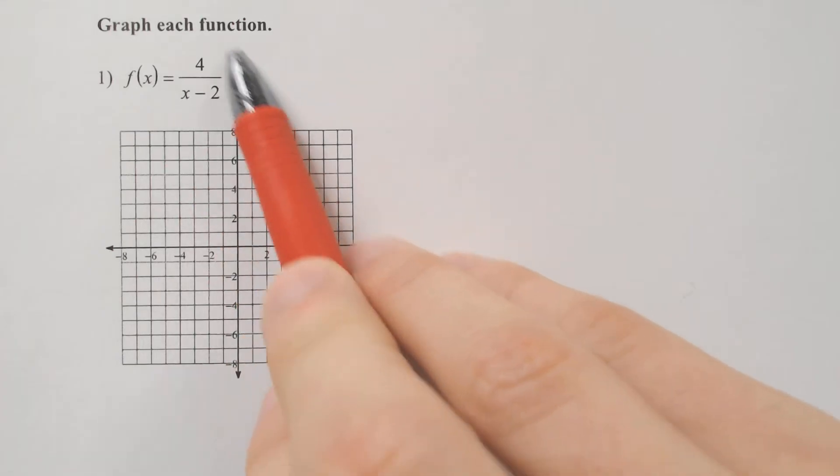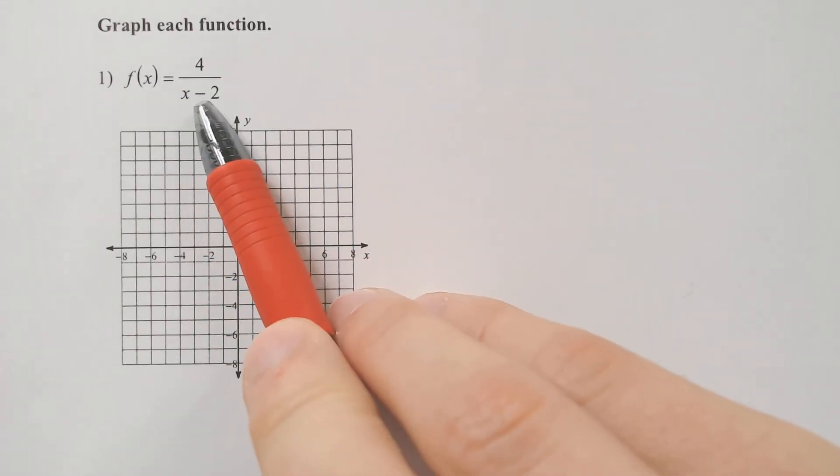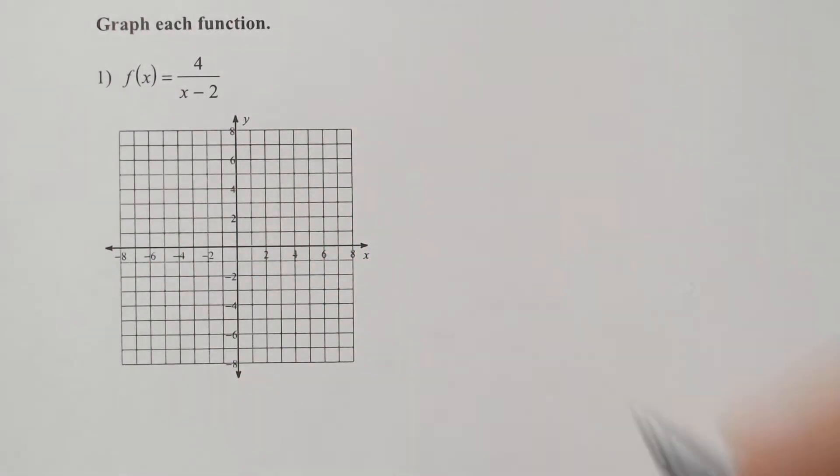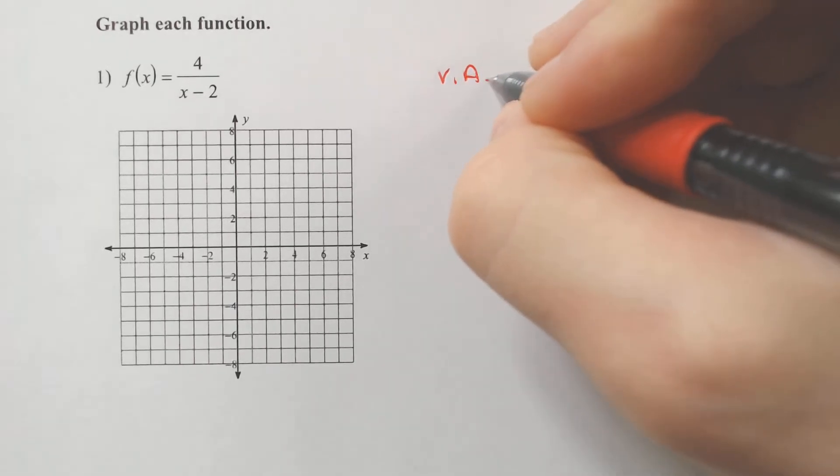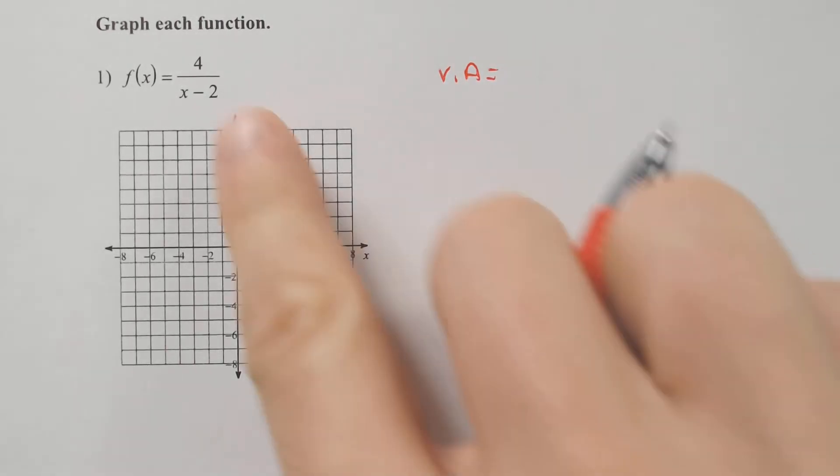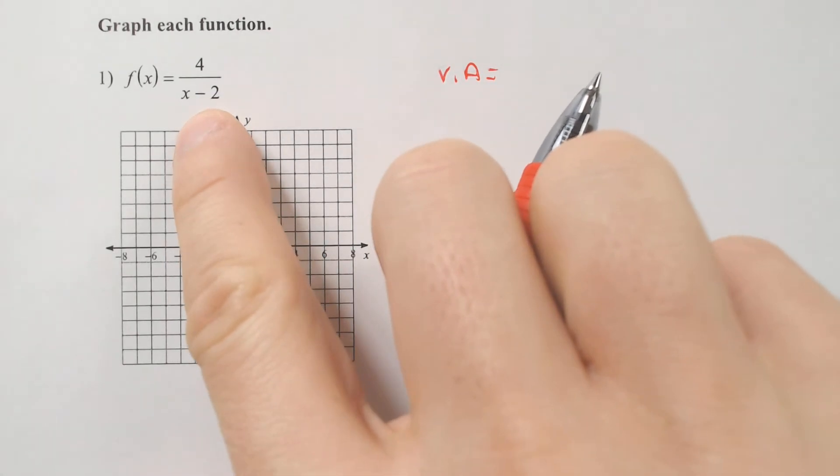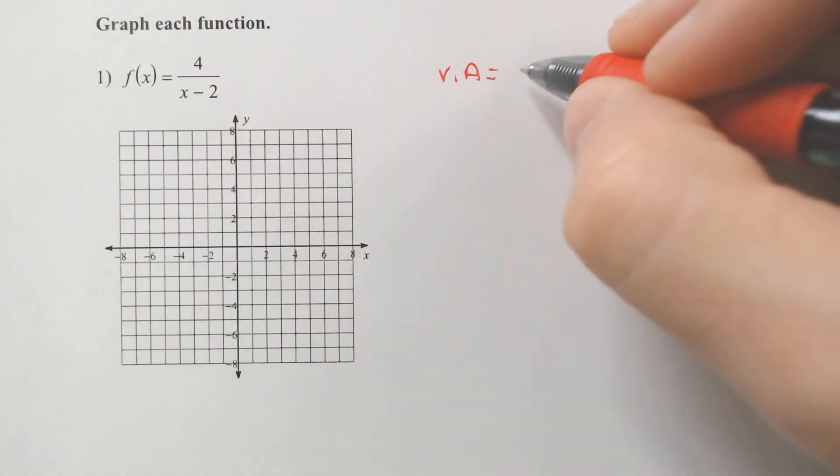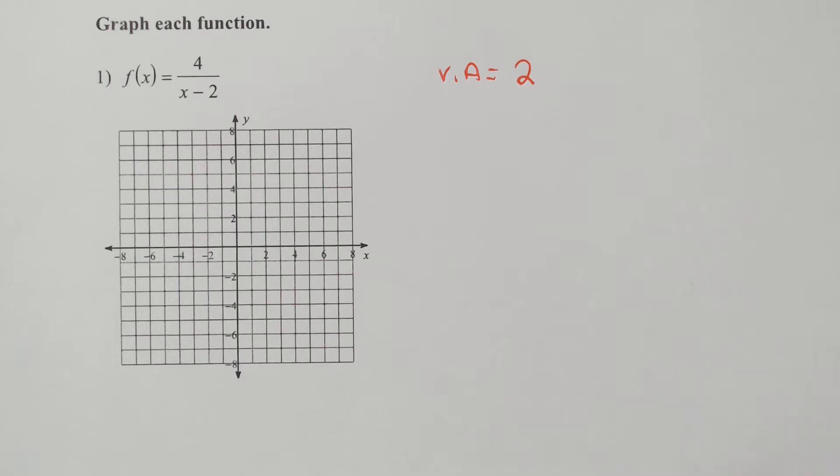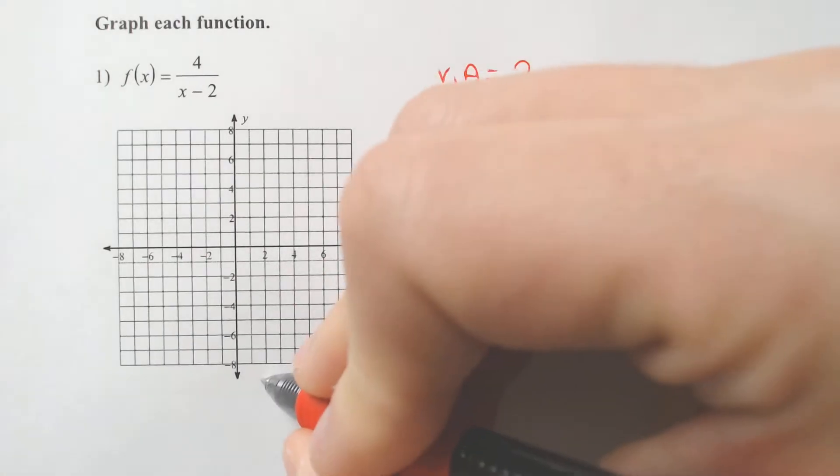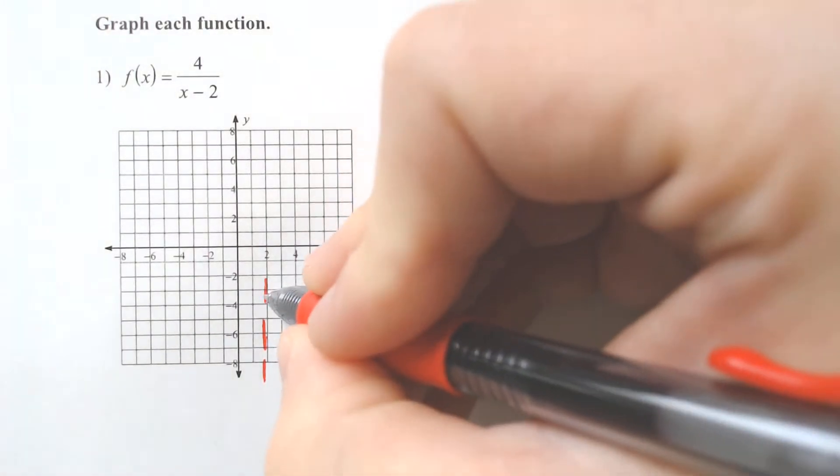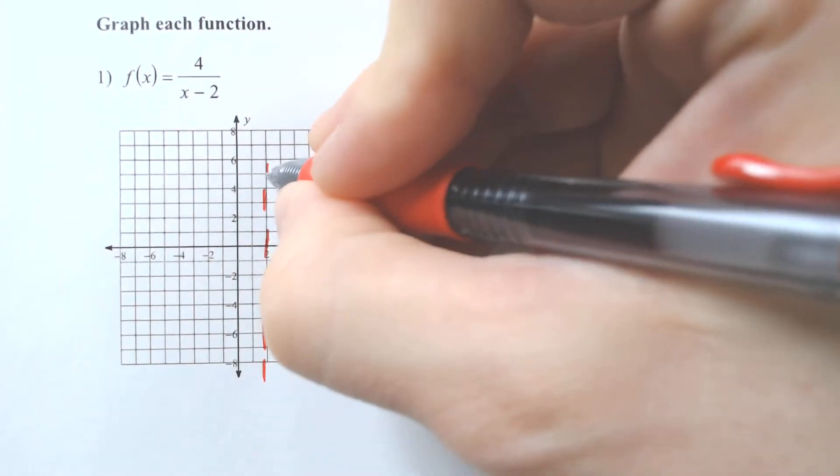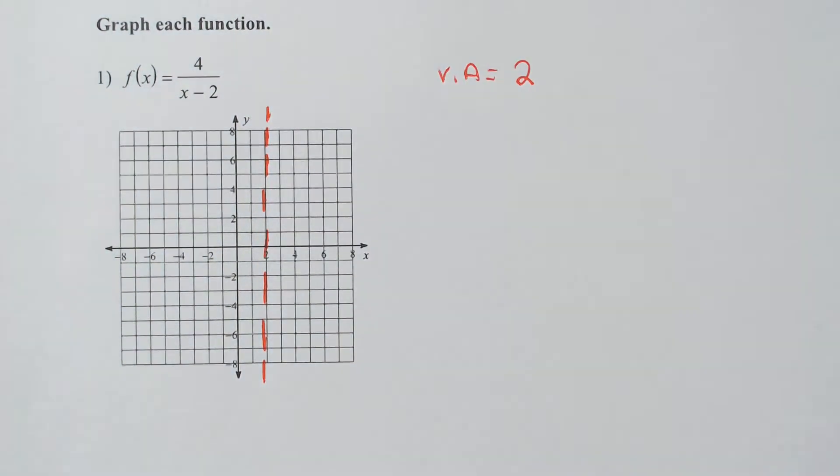We got this problem right here, where you first would probably want to establish the vertical asymptote, which would be when you set the bottom of the fraction equal to zero. So if you set x minus two equal to zero, your vertical asymptote in this case would be equal to two. So I'm going to draw a dotted line here at x equals two vertically.